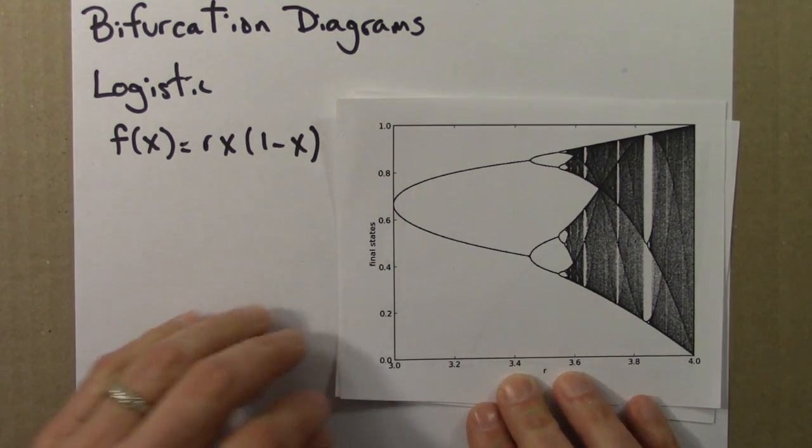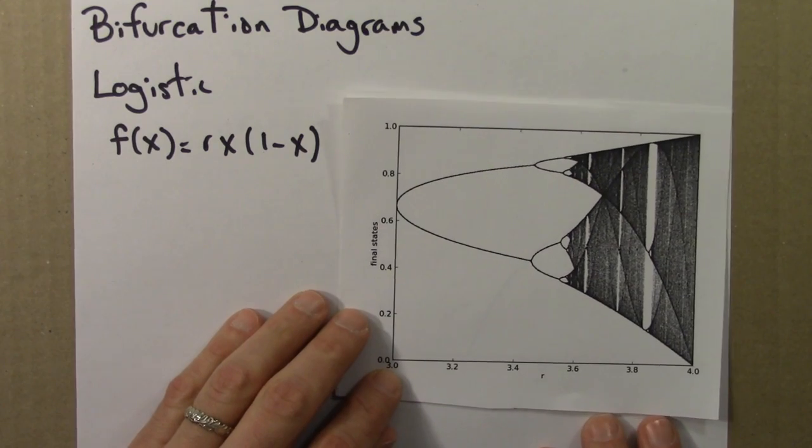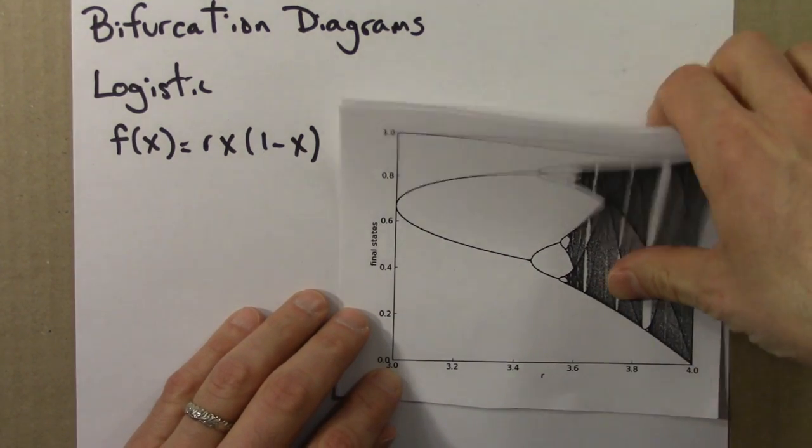So that's the logistic equation. But we could ask, what about other equations? Can we make bifurcation diagrams for them? And what do they look like?